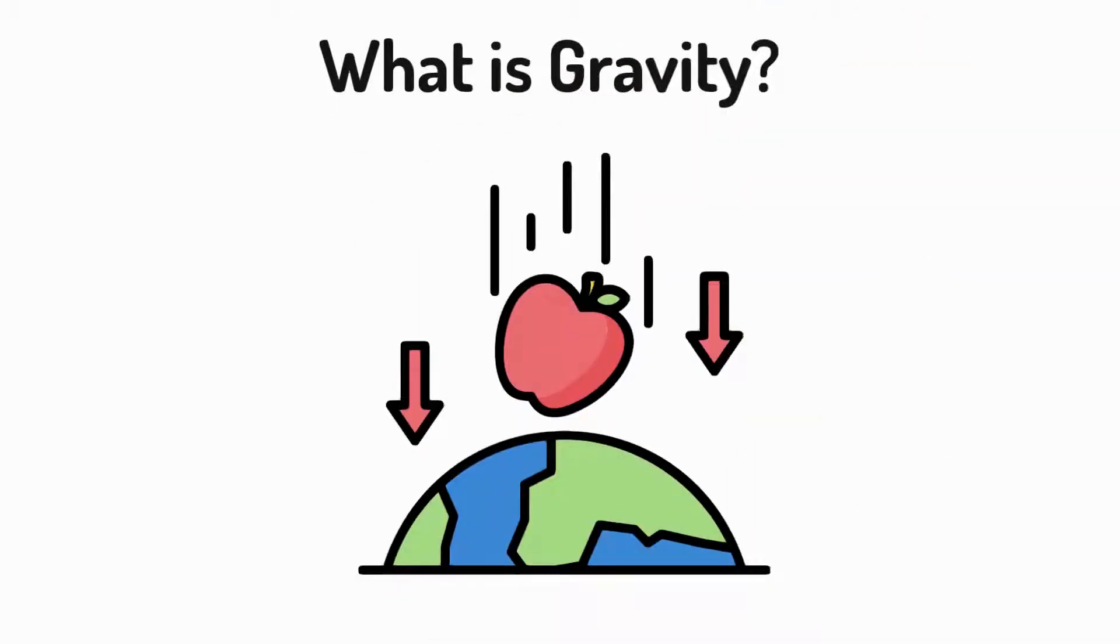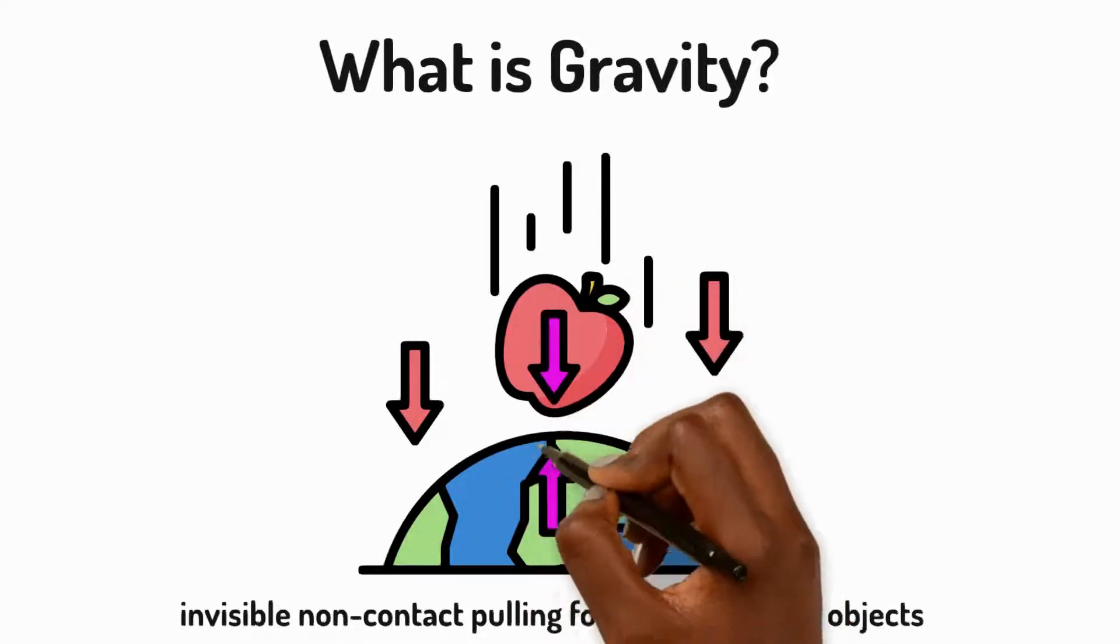What is gravity? Gravity is an invisible, non-contact pulling force between two objects. Gravity pulls objects towards each other's centres.